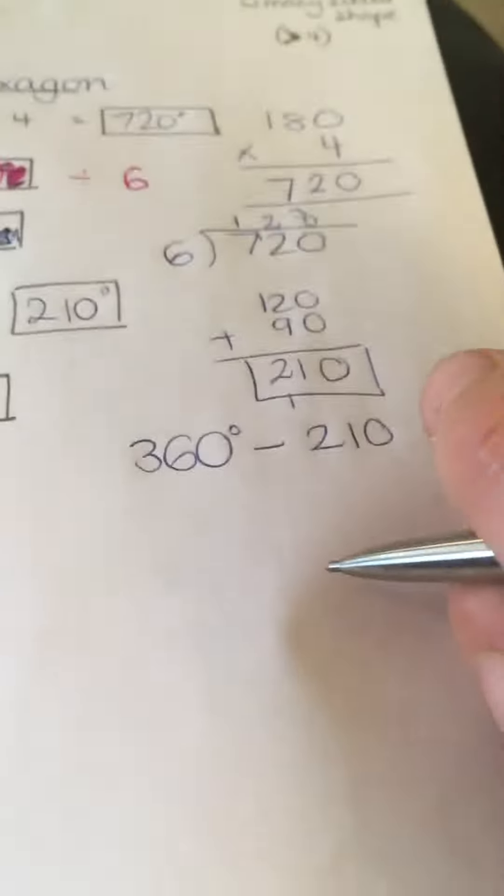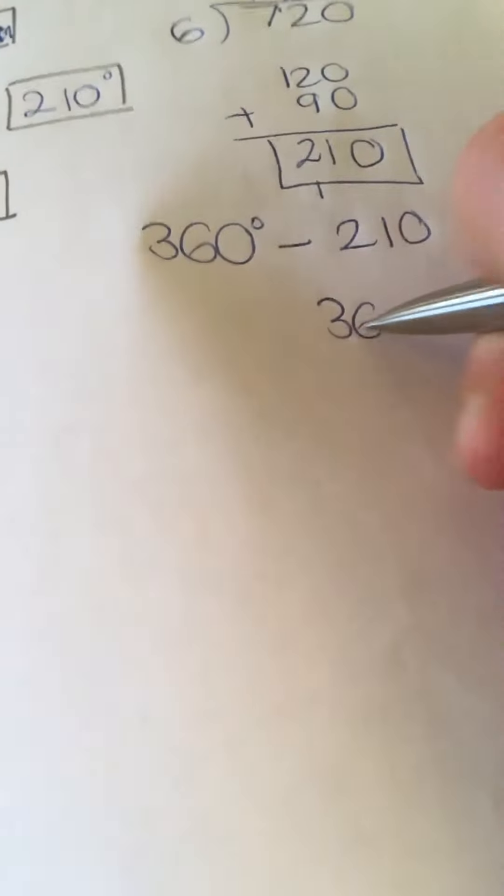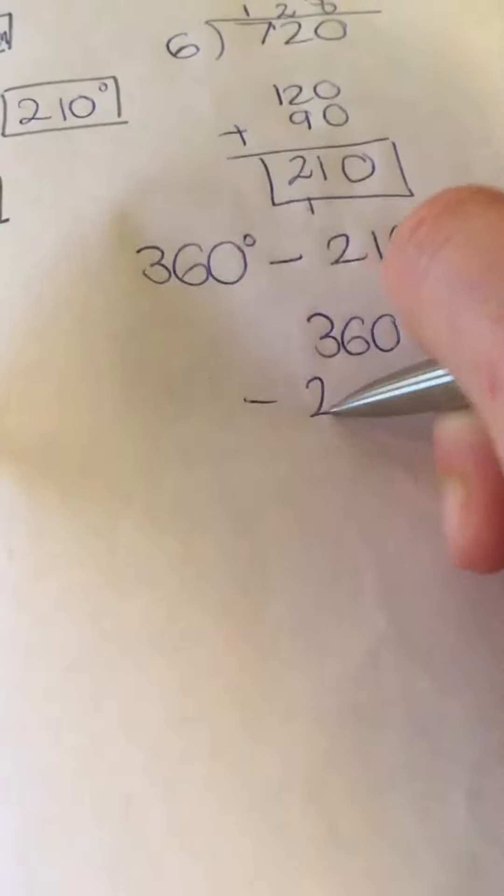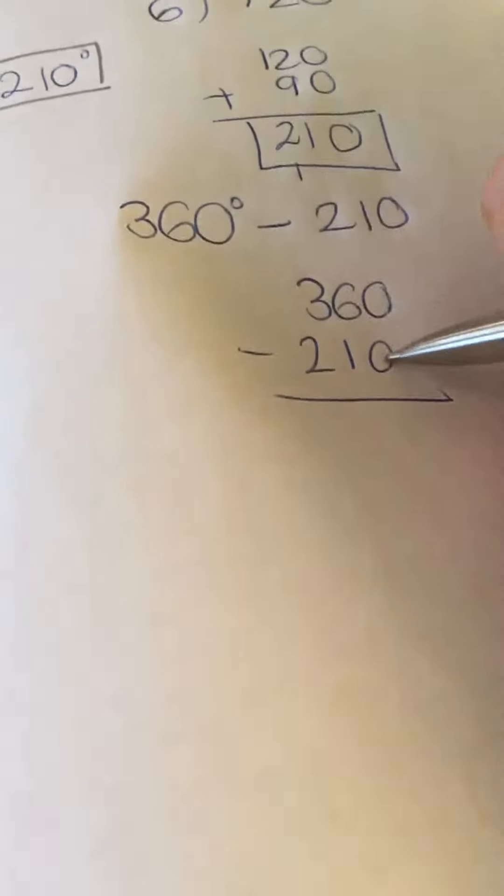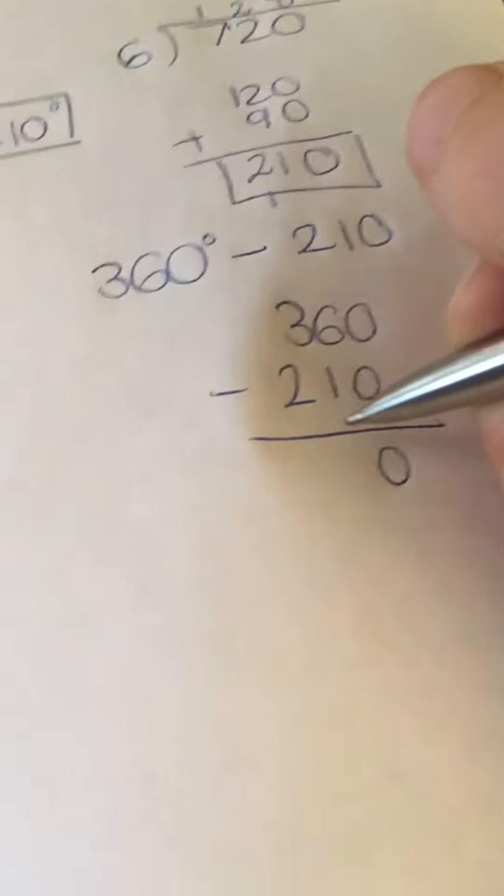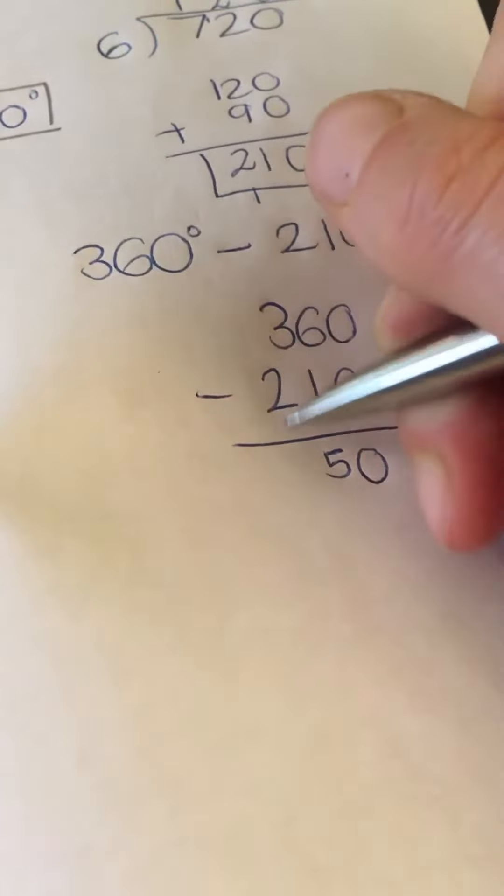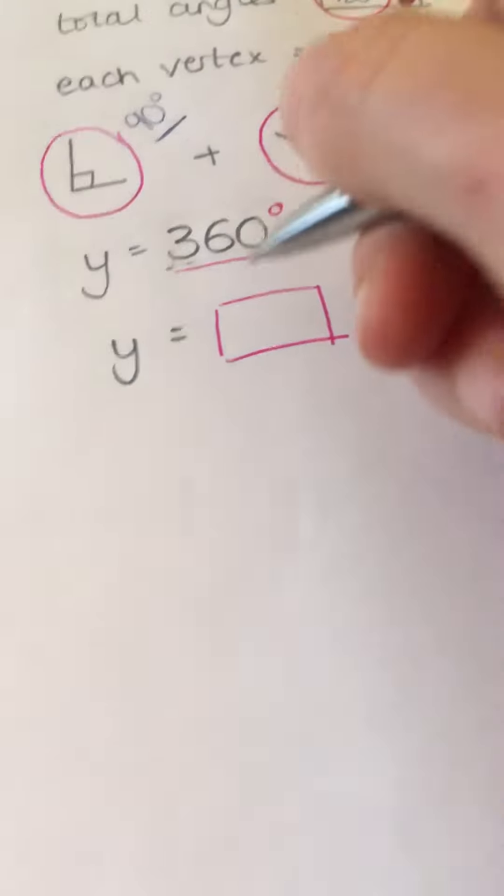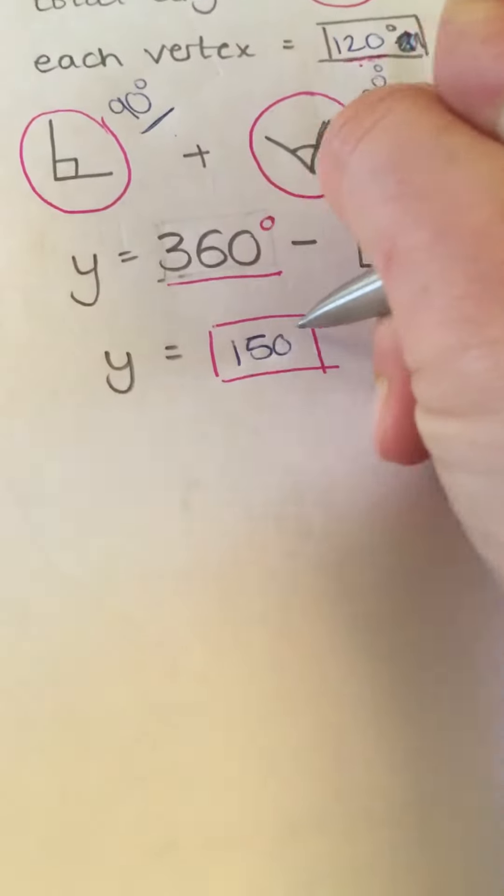So, I should do that in my head, but I'm going to write it out anyway. 360 take away 210. 0 take away 0. 0, 6 take away 1. 5, 3 take away 2. 1. So, Y has a value of 150 degrees.